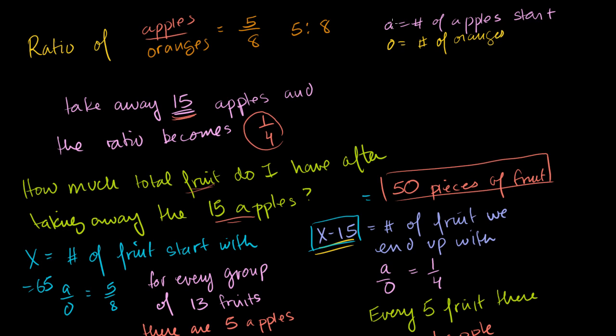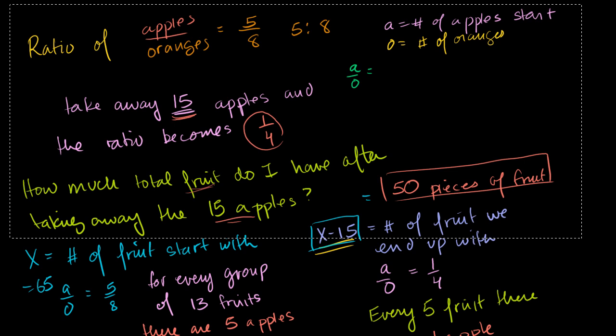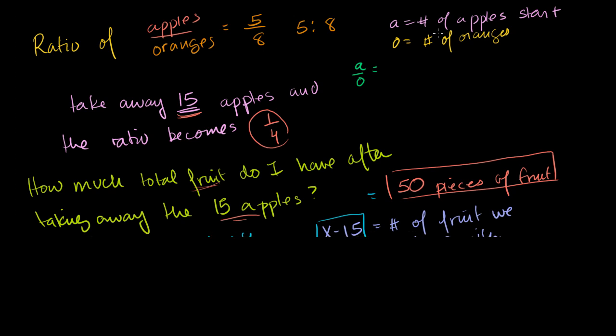We're starting off with A apples and O oranges. So the ratio of A to O is equal to what? Instead of trying to fit this whole problem into this part of the screen, let me copy and paste this part and do it at the bottom part of the screen where I have some extra real estate. A is the number of apples to start with and O is the number of oranges.